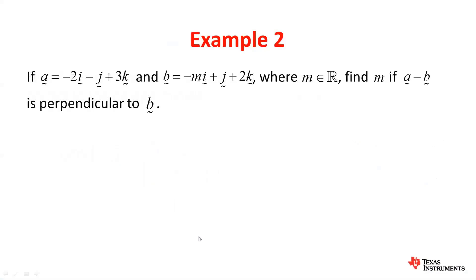OK, moving on to the second example. If a = -2i-j+3k, and b = -mi+j+2k, where m is a real number, find the value of m if the vector a-b is perpendicular to b.